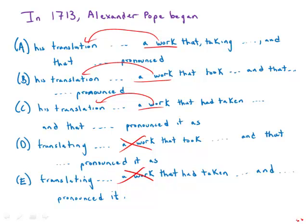Second, notice that in answer A we have 'a work that taking seven years to complete.' After 'that,' there should be a complete noun-verb clause, but it's not — it's just followed by a participial phrase. So that's a big problem, and answer A is out.